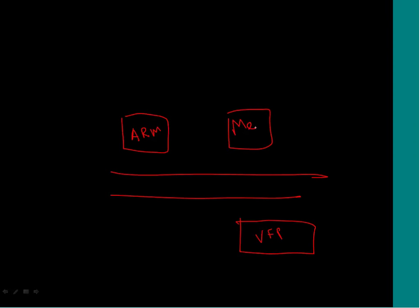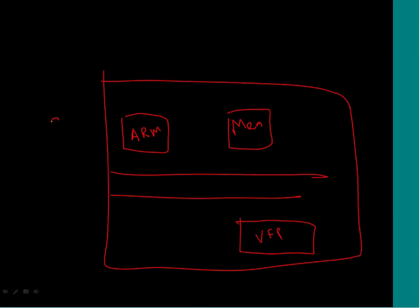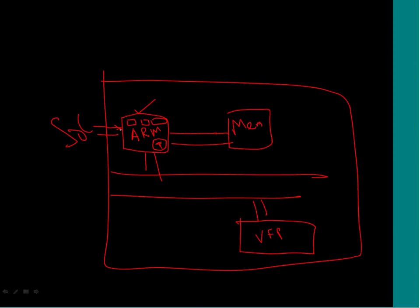This is a typical system-on-a-chip. We have an ARM IP inside. We saw what ARM does, what the pipeline structure is, all the ARM instructions including Thumb state instructions, and how interrupts are handled. Interrupts can come from the outside world or from peripherals inside the chip. After looking at interrupt and exception handling, we started looking at coprocessors.